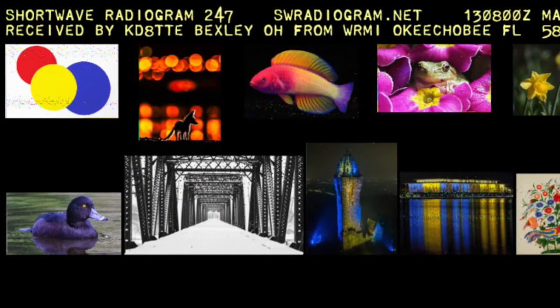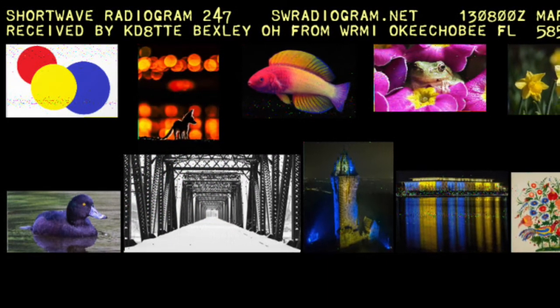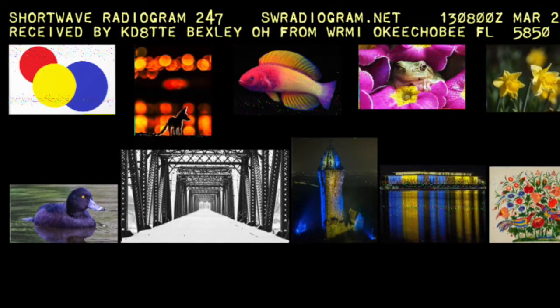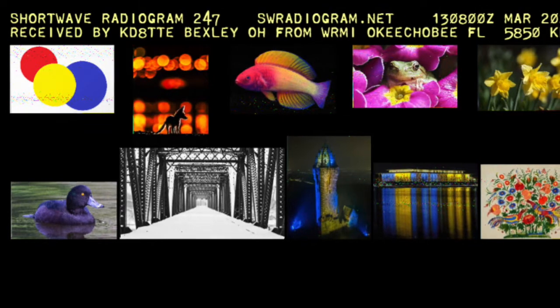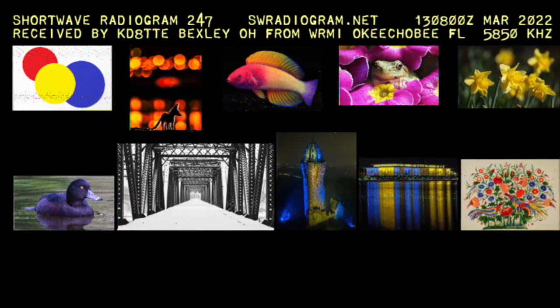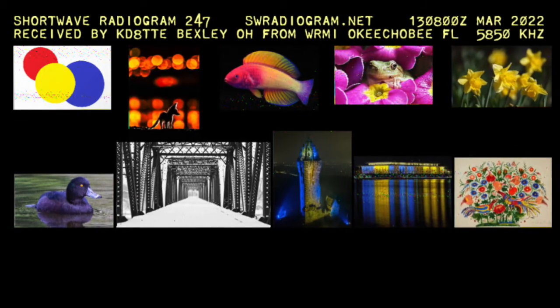This is not a surprise. As we get deeper into nighttime conditions, the distance shortwave signals travel will go longer. Much of the power of that signal is simply skipping over my receive antenna. My third reception was from WRMI in Okeechobee, Florida, via 5 megahertz on the 13th of March at 4 o'clock in the morning Eastern Daylight Time. A few hours later than the previous reception, but on a lower frequency over a longer distance — quality is much better, and all 10 images decoded.